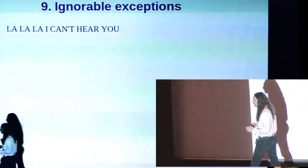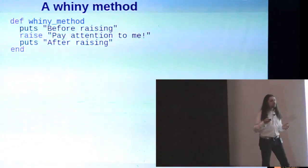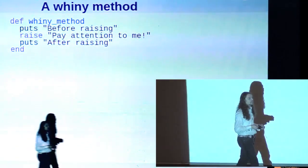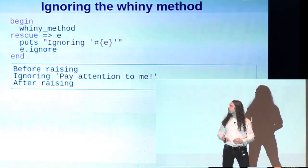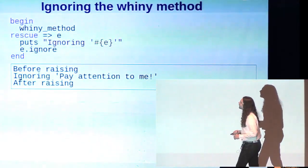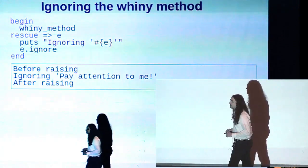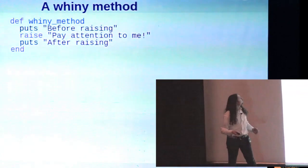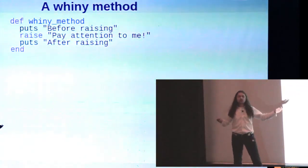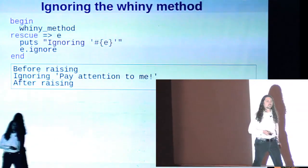So in Ruby, if you really don't like an exception, you can just ignore it. So here's a whiny method that raises an exception, and it's a stupid exception. We don't really care about it. So what we'll do is we'll say, call the whiny method and rescue the exception, and then when we rescue it, we'll just call ignore on it. And what you can see is that, remember we defined this with before raising and then after raising. After raising should never be hit, right? Because we raised an exception there. Well, actually, it is hit because we decided to ignore the exception.